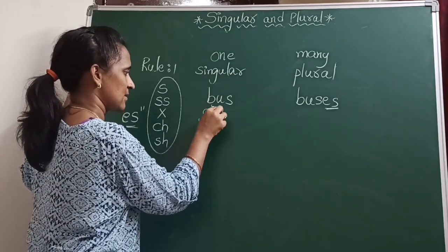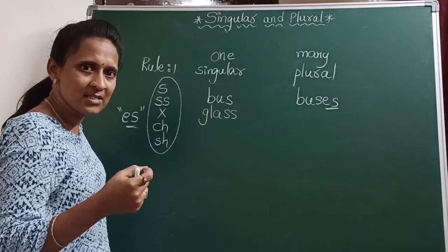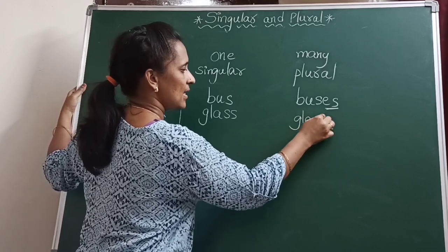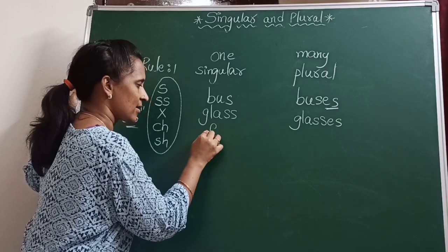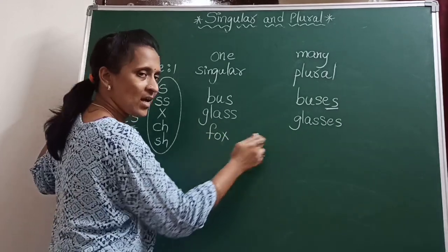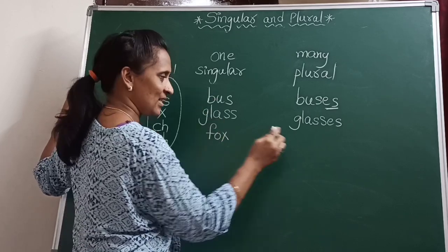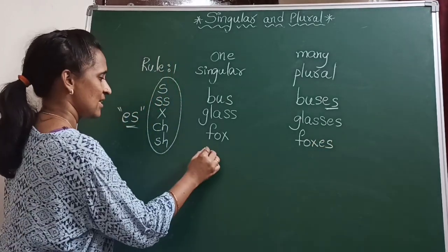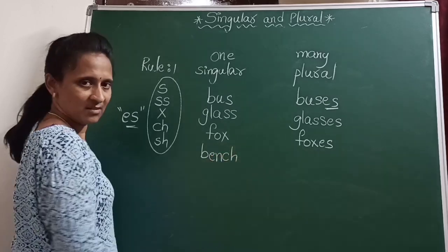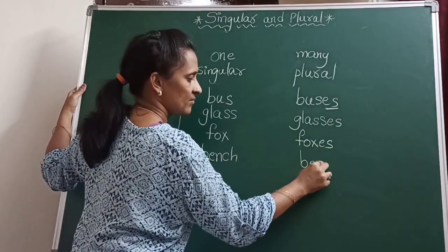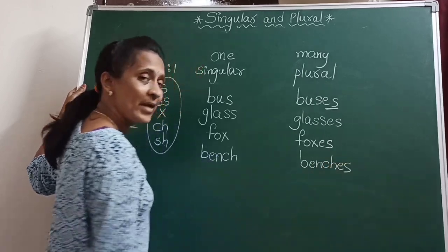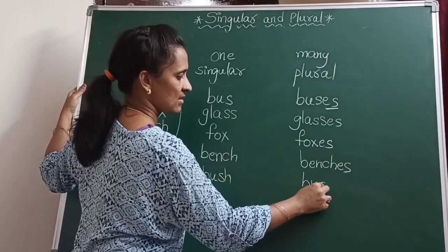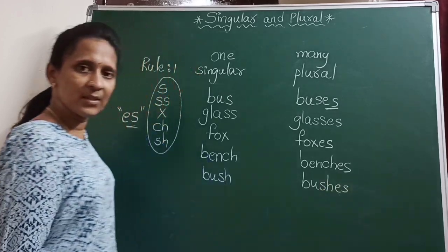Next, glass. Pronounce it, children: glasses. Now, fox — what do we have to add after the noun? Yes, ES — foxes. Bench — benches. Bush — bushes. If the word is ending with these sounds, what we have to add is ES at the end of the word, and then it will become plural.